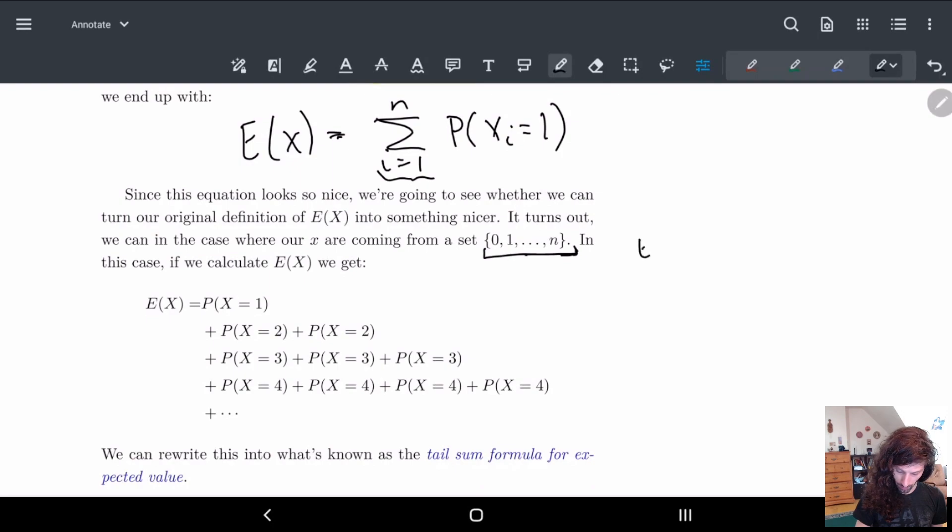Normally we have E(X) equals the sum of X times P(X = x). Here if we make X go from 0 to n, well if X equals 0 we get 0 times something, so nothing happens.